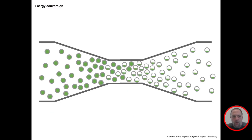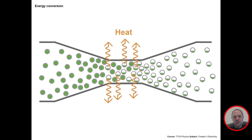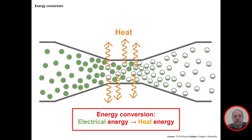Energy conversion always takes place when you do something with electrical energy. In a resistor, the wire is reduced in cross-sectional area — made much smaller. Like squeezing a tube of water means less water flows through per second, the same happens with a resistor, only with electrons. This produces a lot of heat, so the electrical energy inside the electrons is converted into heat energy — that is the energy conversion that takes place in a resistor.